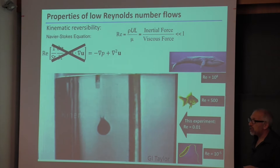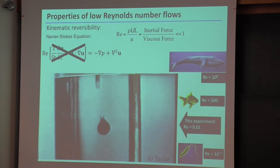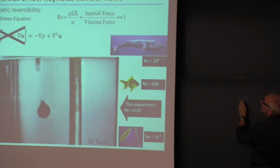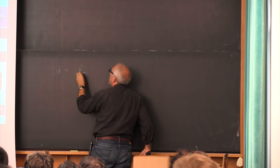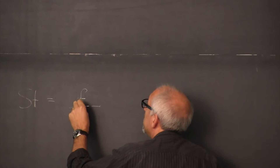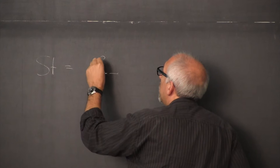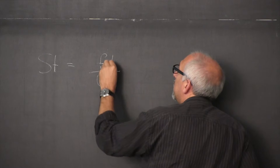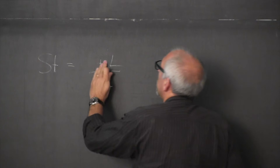The Strouhal number is defined as a frequency times a length scale over a velocity — so it has units of one over time times a length divided by a velocity, giving a dimensionless number that measures the importance of unsteady effects.